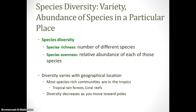Both species richness and species evenness are beneficial, and you really want a balance of the two. If you have all one type of species — for example, a monoculture crop of corn — an insect could come in and decimate it. This is what happened with the Irish potato famine. But if you have a variety of different species, you have more resilience built into your ecosystem.